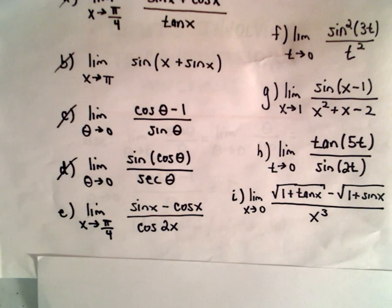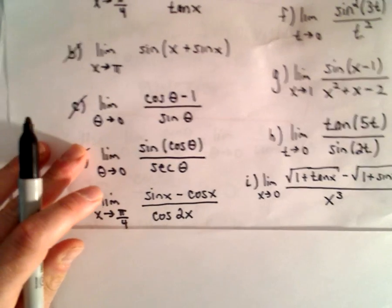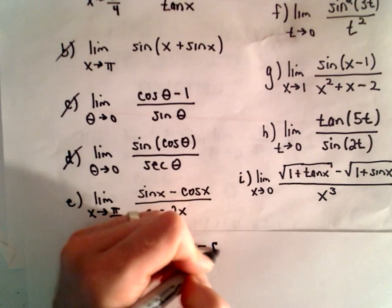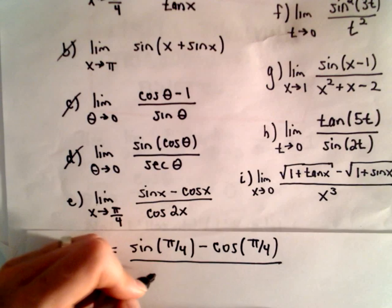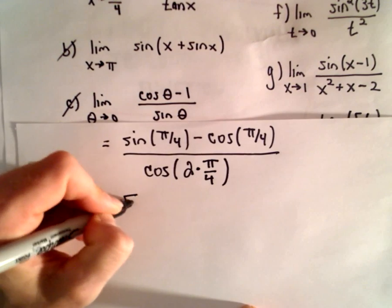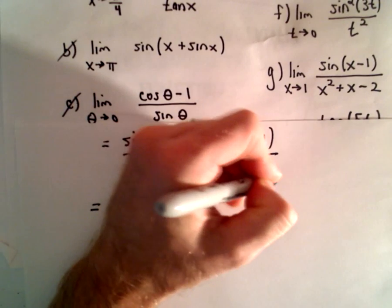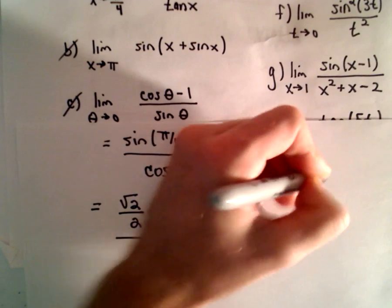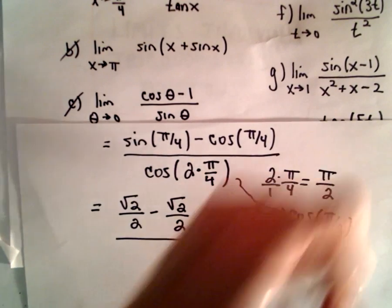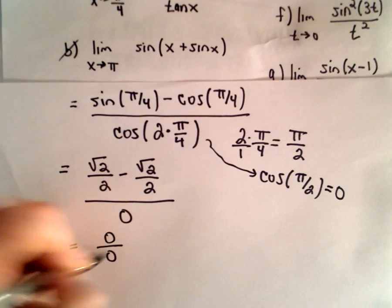Now let's look at part E. We've got the limit as x approaches pi/4 of sine x minus cosine x divided by cosine of 2x. Substituting in pi/4 for x, we have sine(pi/4) minus cosine(pi/4) in the numerator, which is √2/2 minus √2/2. In the denominator, cosine of 2 times pi/4 equals cosine(pi/2), which equals 0. So we're left with 0 over 0 — the indeterminate form again.